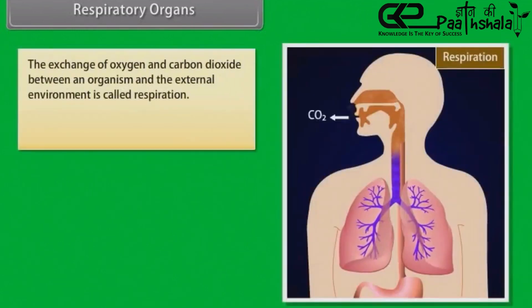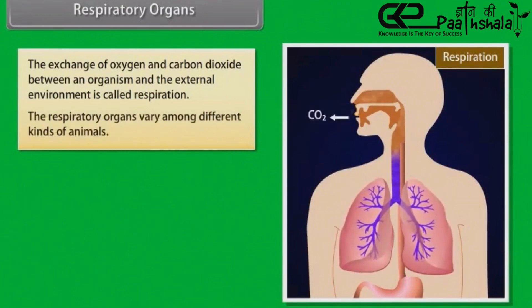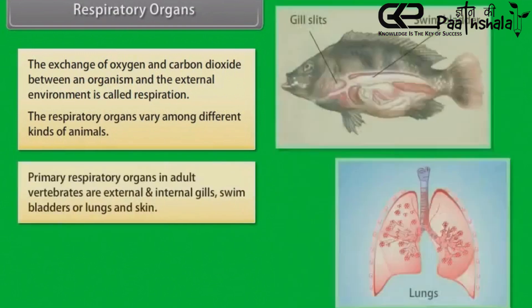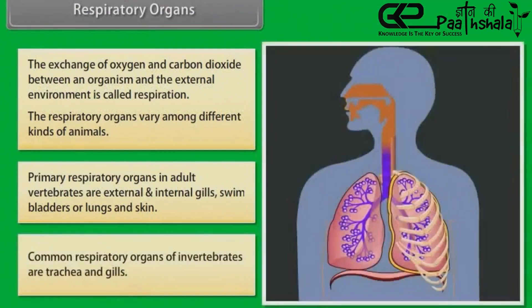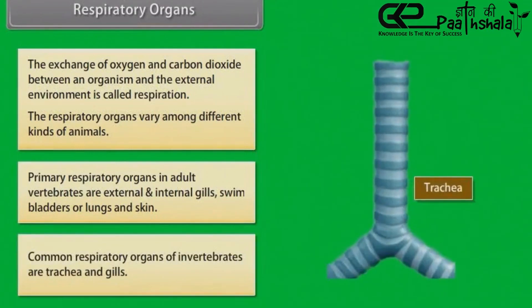Respiratory organs. The exchange of oxygen and carbon dioxide between an organism and the external environment is called respiration. The respiratory organs vary among different kinds of animals. Primary respiratory organs in adult vertebrates are external and internal gills, swim bladders or lungs, and skin. Common respiratory organs of invertebrates are trachea and gills.